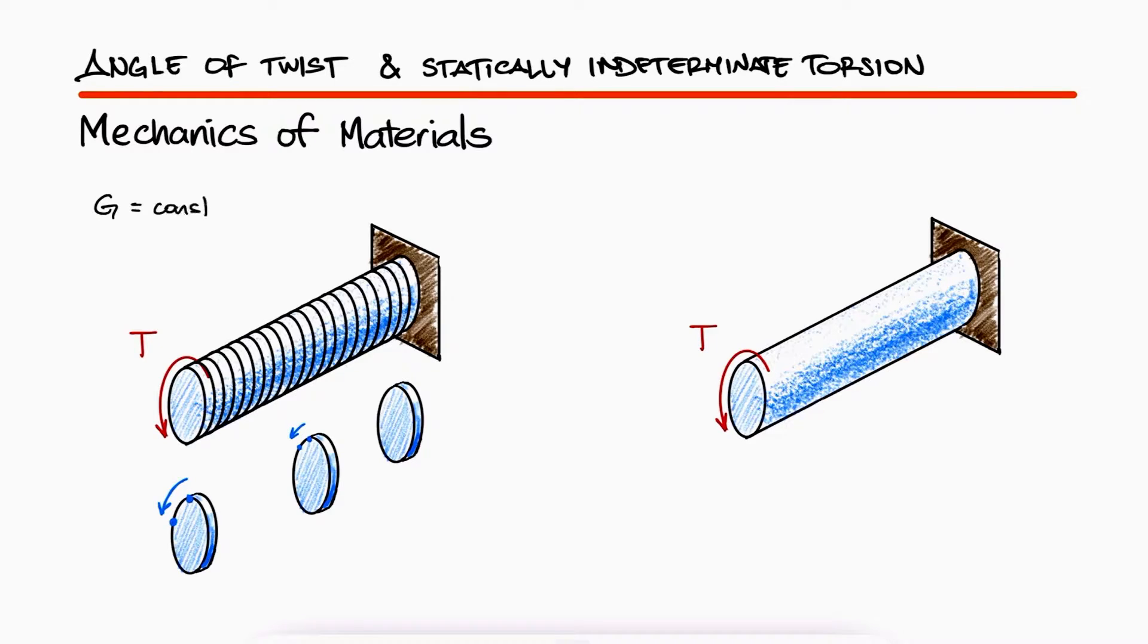If the material is homogeneous, and the cross-section is constant, and most importantly, we know that the rod is being deformed within the elastic region of the material, each disk would be rotating the same amount with respect to its two adjacent disks.